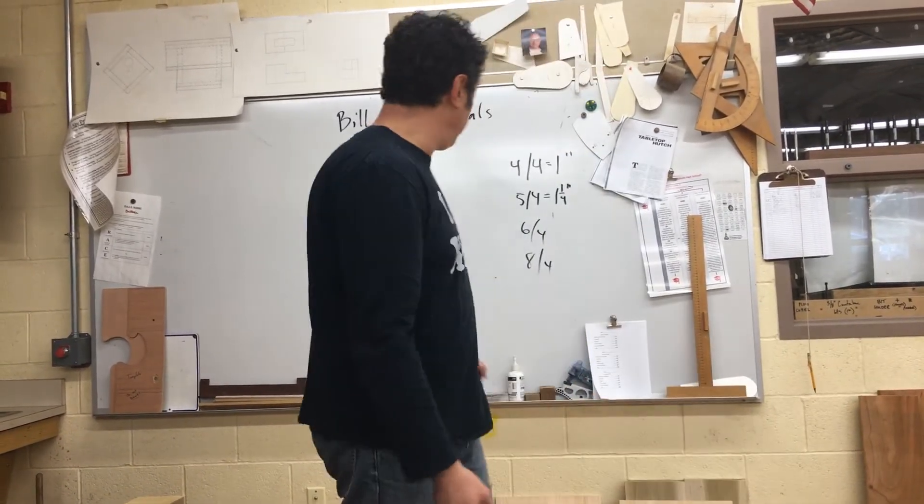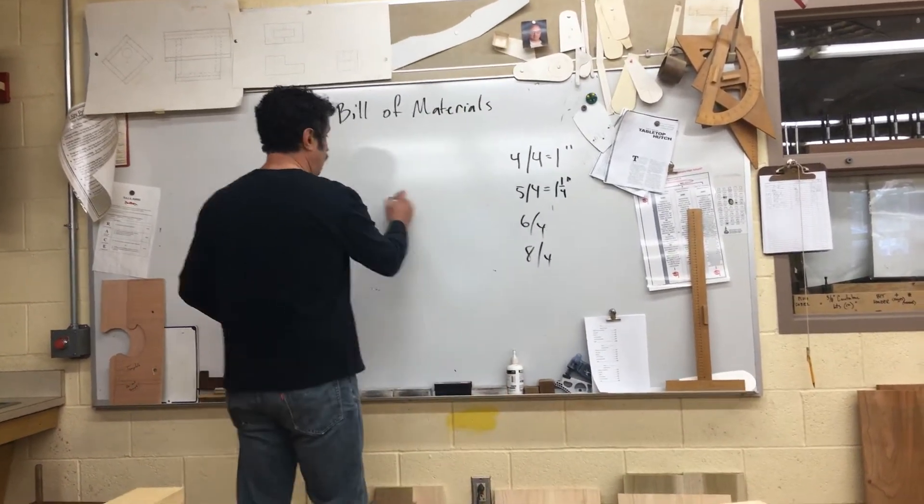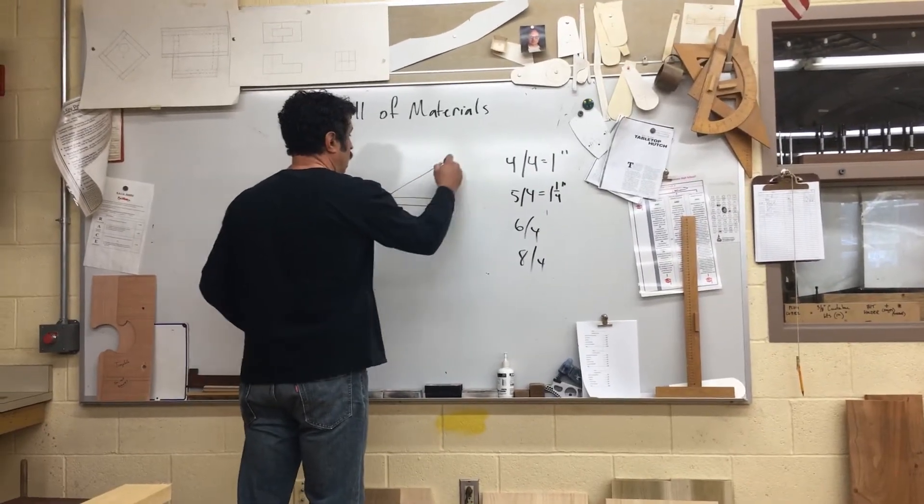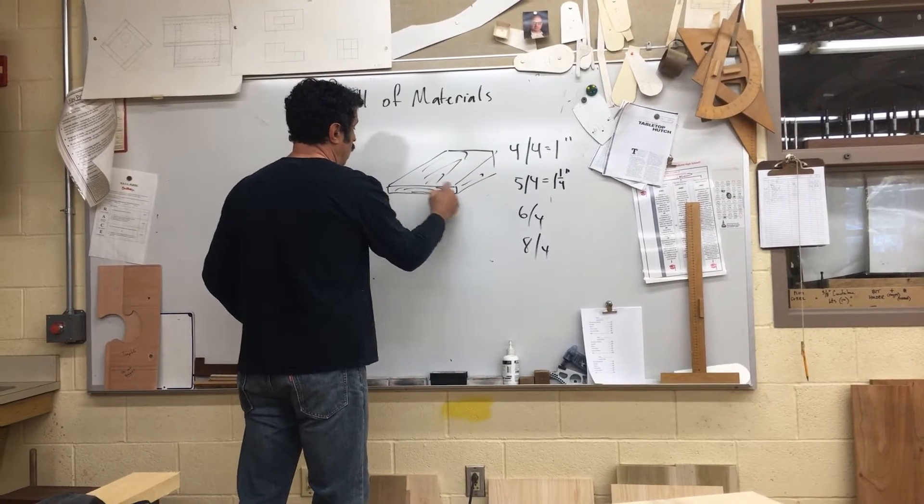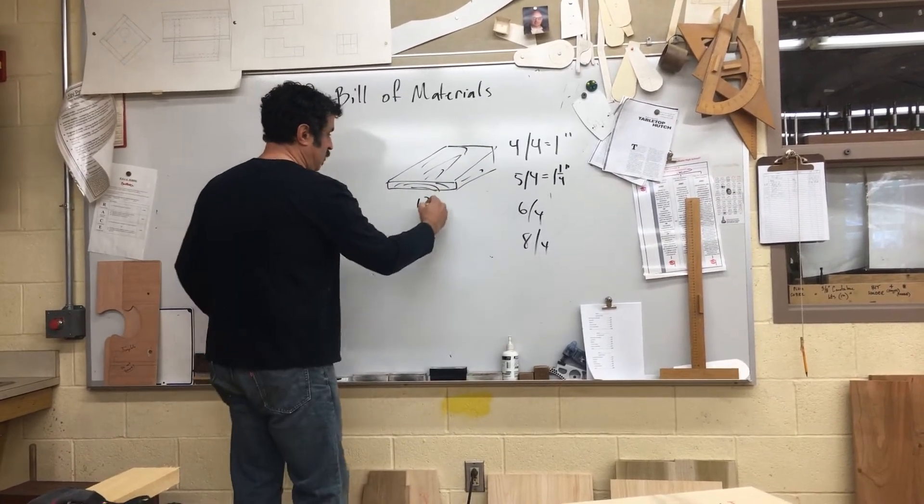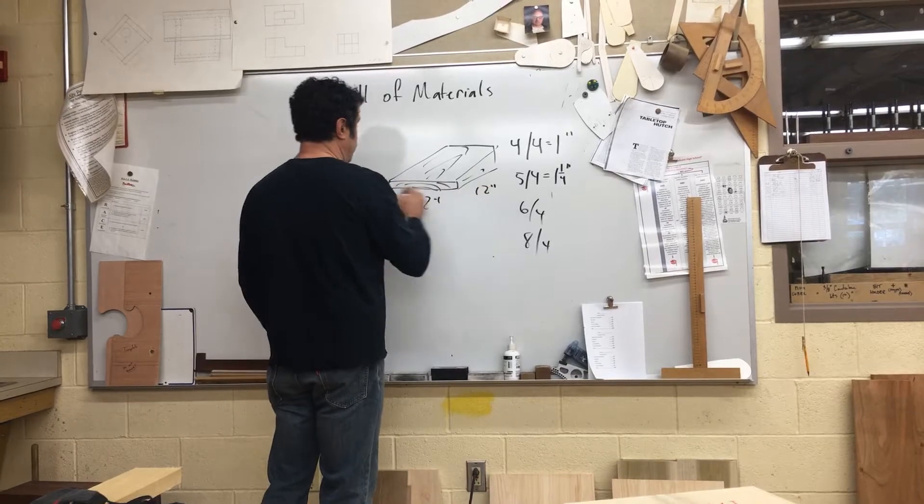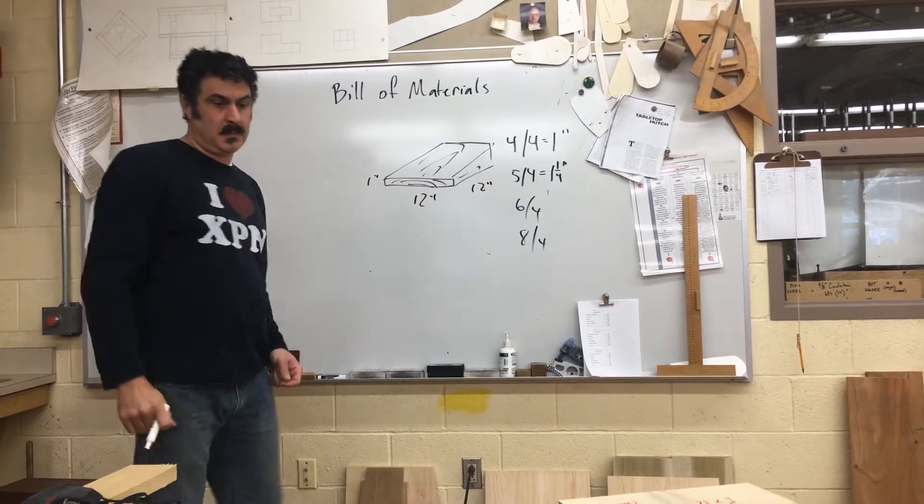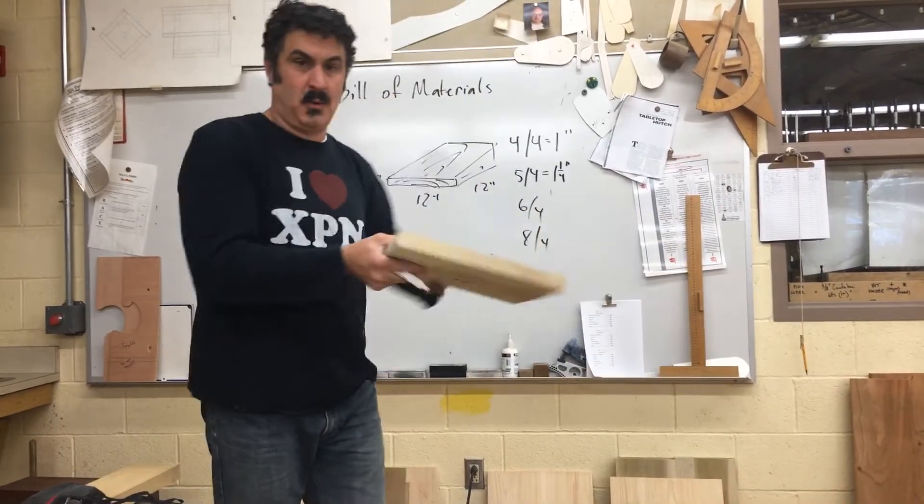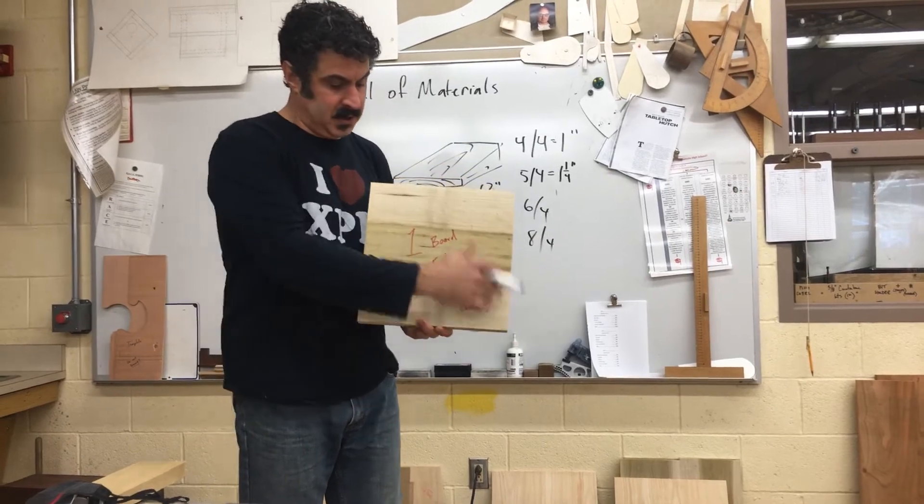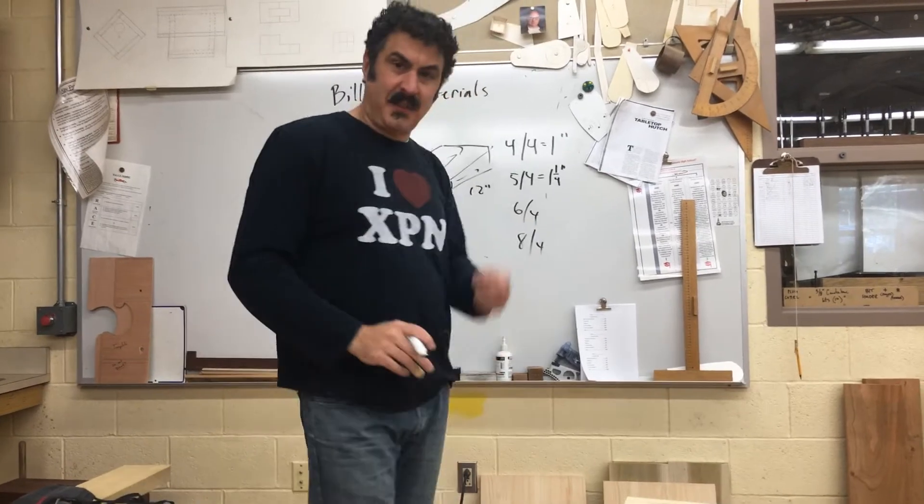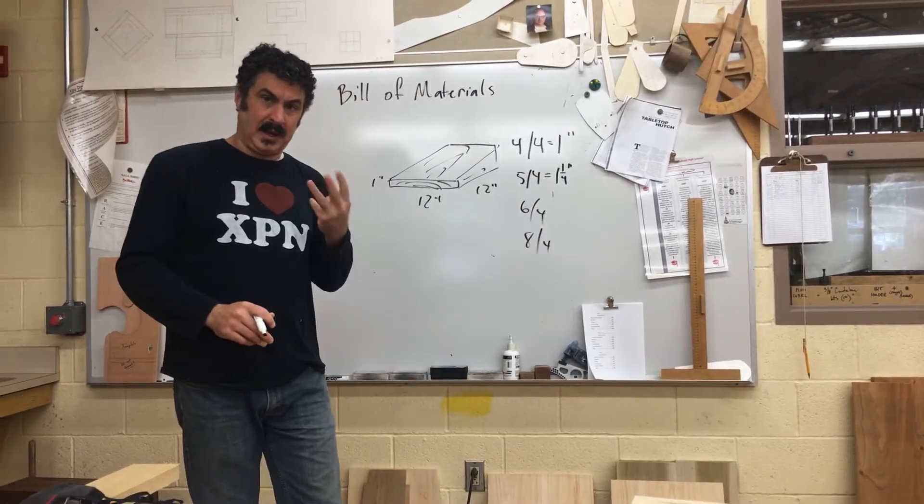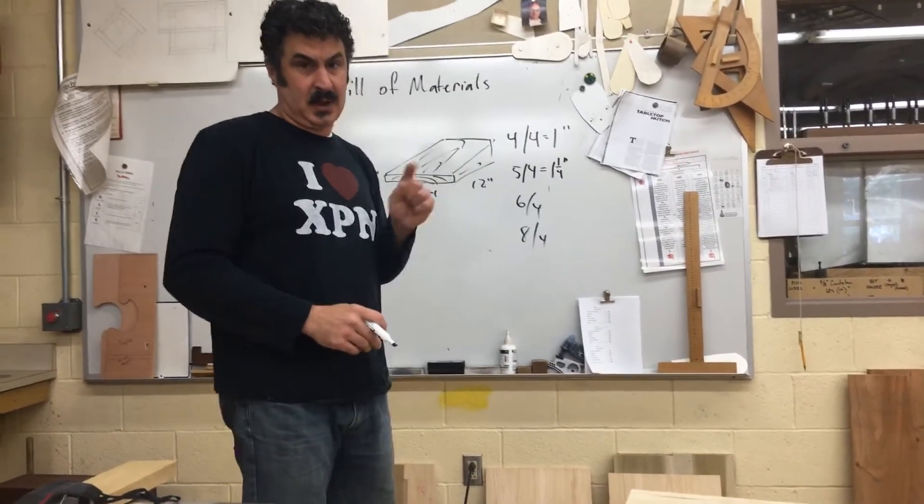So a board foot would be a piece that measures 12 inches by 12 inches by one inch. It's a board foot. That's a volume that we're doing by multiplying three dimensions. Thickness times width times length.